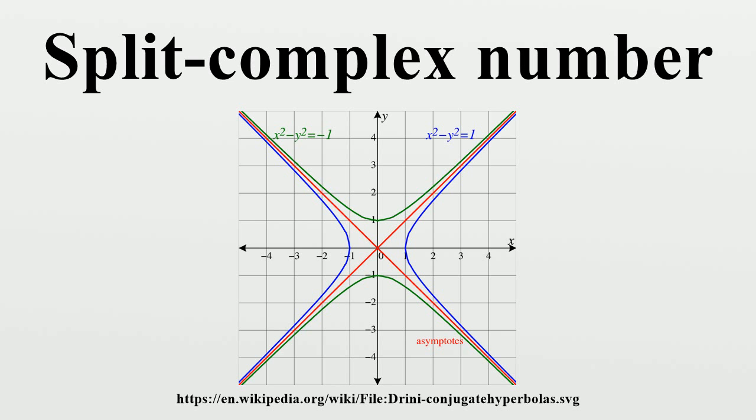Split complex numbers z and w are said to be hyperbolic orthogonal if ⟨z,w⟩ equals 0. While analogous to ordinary orthogonality, particularly as it is known with ordinary complex number arithmetic, this condition is more subtle.